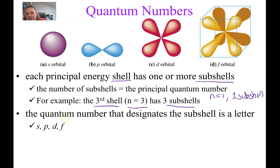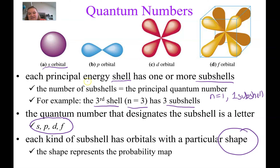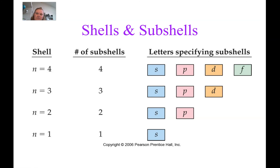The second quantum number refers to the shape of our orbitals, and instead of a number we use a letter: S, P, D, and F. These letters tell us the shape. S is a sphere, P is often called a dumbbell, D is a four-leaf clover, and F is a flower shape. This second quantum number tells us the shape, while the first told us energy level and size.